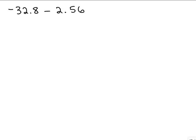All right, let's do this subtraction problem. So we have negative 32.8 minus 2.56. This is a subtraction problem with a negative number, so we want to rewrite the subtraction as adding the opposite. So negative 32.8 plus a negative 2.56.